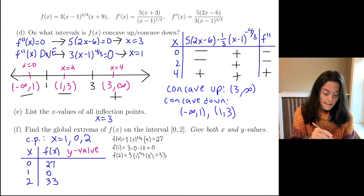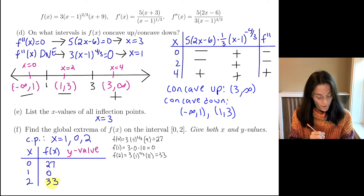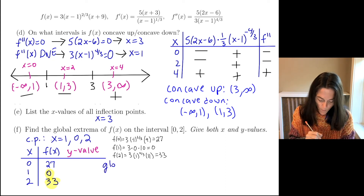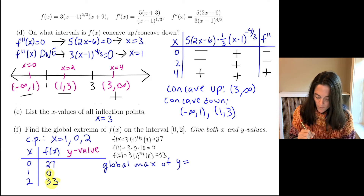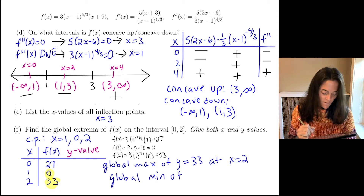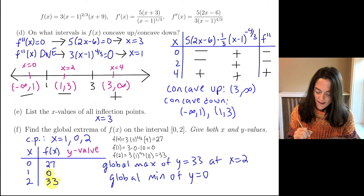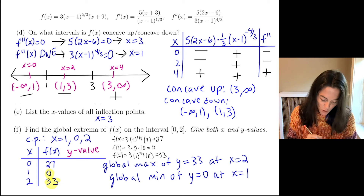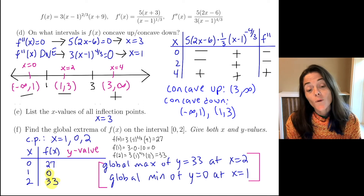And finally, f of 2: we have 3 times 1 to the 2/3 power, which is 1, times 11 — that's 9 plus 2 — so this is 33. Now we can make our conclusion. The highest overall y value is 33, so we have a global max of y equals 33 at x equals 2. We have a global min of y equals 0 at x equals 1. This is the end of this problem — it's a really great problem with so many parts. This problem used ideas from both sections 1.5 and 1.6.